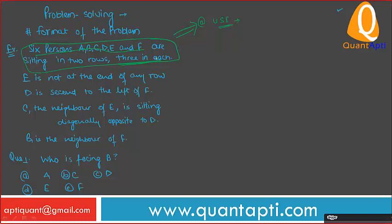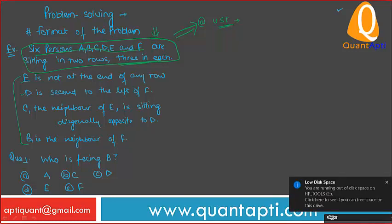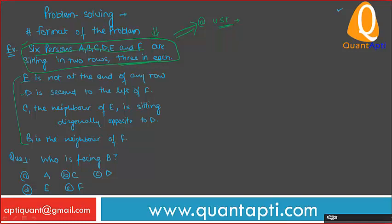These first sentences give you some basic information that is essential to give you the general idea of the situation. Without this, you cannot use the rest of the data. For example, if I tell you 'E is not at the end,' the secondary information tells you how many persons are in each row — only then can you place E in the middle. The trick to find secondary information is: it's just the first couple of sentences of the given data.